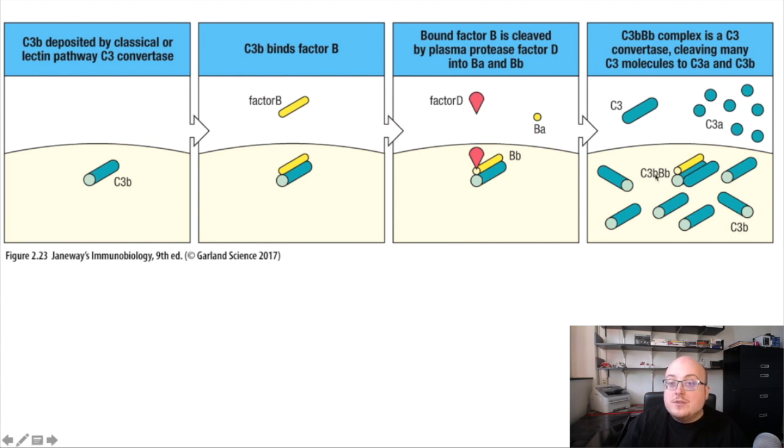So C3BBb is the C3 convertase, and just like with the C3 convertase of the lectin and classical pathways, it's also very good at chewing through a lot of C3s. So we get a lot of deposition, fixation of C3B onto the cell surface, a lot of release of C3A, and all of the downstream effector things that happen. So this is an example of the alternative pathway getting started because of C3B deposition that has already happened because of the other two pathways.